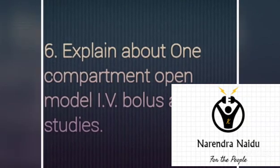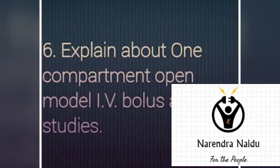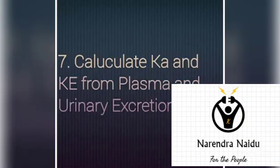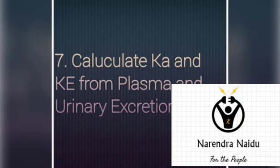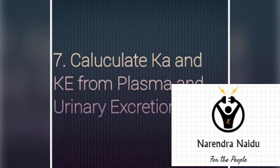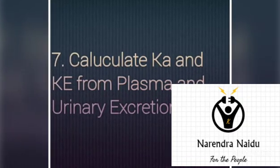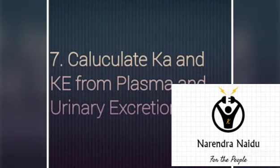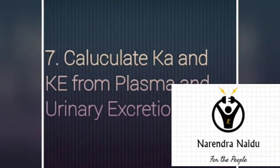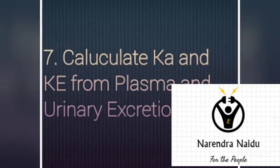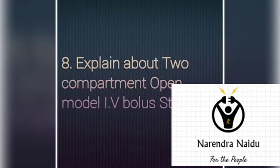You have to write both the IV bolus studies and extravascular studies. The next question is: calculate ka and ke from plasma and urinary excretion data — from both plasma and urinary excretion data you have to calculate these parameters.